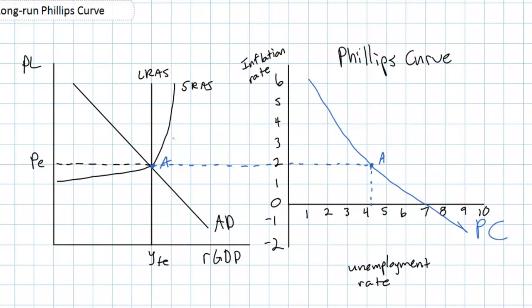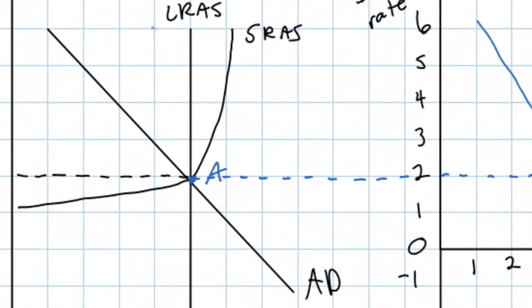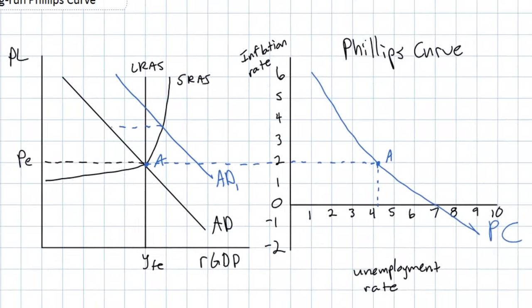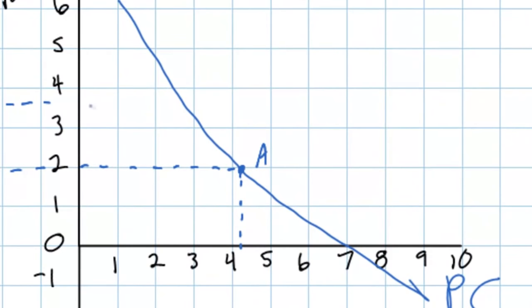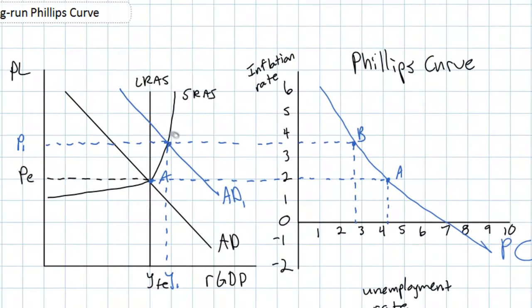As we learned in our previous lesson, anything that increases aggregate demand in the economy will shift the AD curve to the right, causing inflation, an increase in output and employment, and therefore a fall in unemployment. An increase in aggregate demand causes a movement along the short-run Phillips curve up and to the left from point A to point B, which corresponds to point B in the graph on the left.